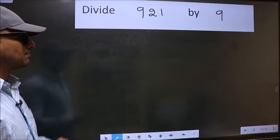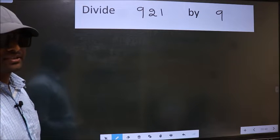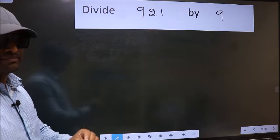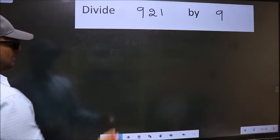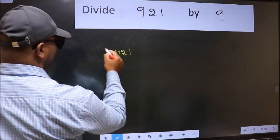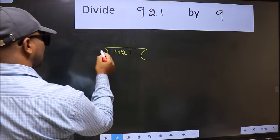Divide 921 by 9. To do this division, we should frame it in this way: 921 here and 9 here.